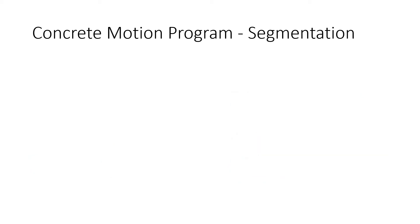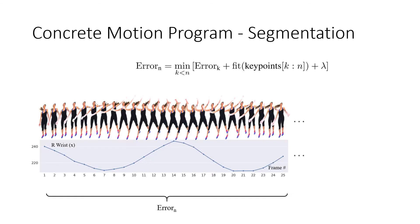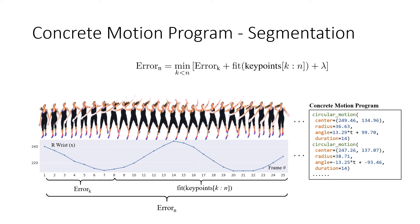For longer videos, we divide the keypoint sequence into smaller segments and fit a motion primitive on each segment. Our goal is to jointly do the segmentation and the primitive fitting to minimize the overall keypoint error between the detected poses and the program reconstructed poses. We define the following recurrence relation: the best fit of n frames is the best fit for the first k frames plus the best fit single primitive from k to n minimized over all possible values of k. We solve this using a dynamic programming algorithm described in detail in the paper.